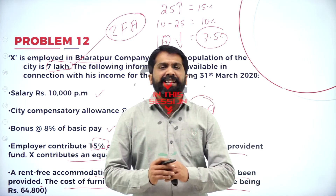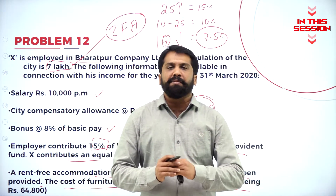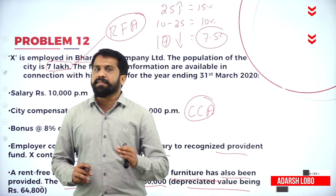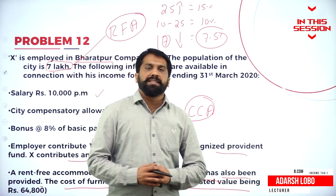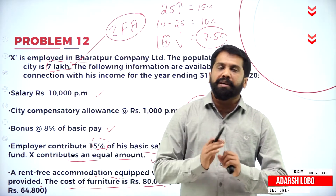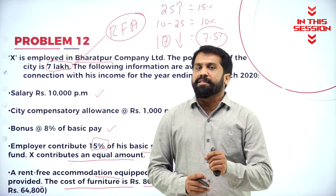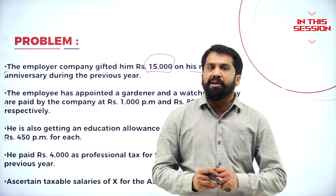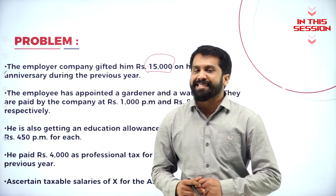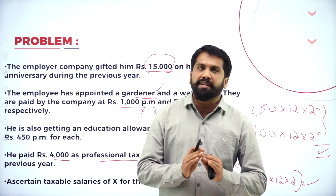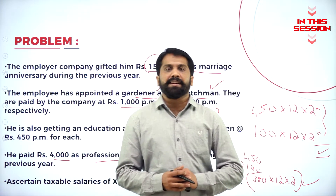Under rent-free accommodation, anything given as an asset like furniture, refrigerator, TV, or washing machine given to your employee by employer — 10% of the cost should be taxable. Whatever gift collected on occasion of marriage is exempted. Any professional tax or employment tax paid by employee has to be deducted.